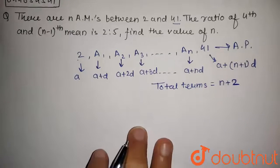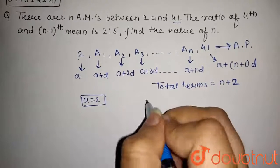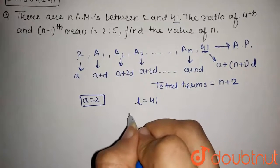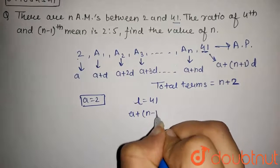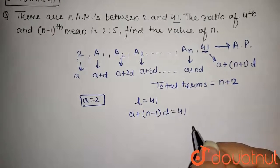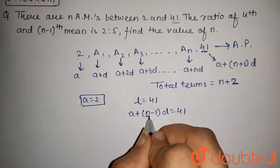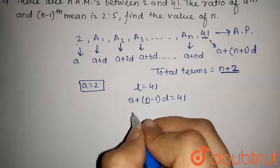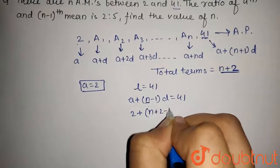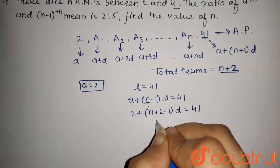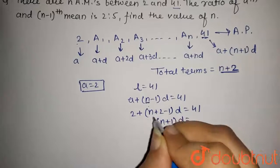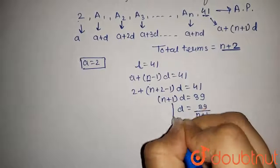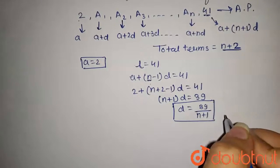We have a equals 2 as the first term and the last term is 41. By the formula, a plus (n minus 1)d equals 41, where n is the total number of terms, which is n plus 2. Substituting, we get 2 plus (n plus 2 minus 1) into d equals 41, so (n plus 1) into d equals 39. Therefore, d equals 39 upon (n plus 1).